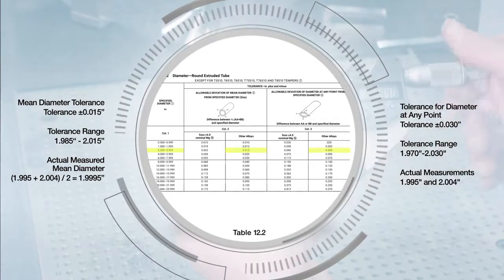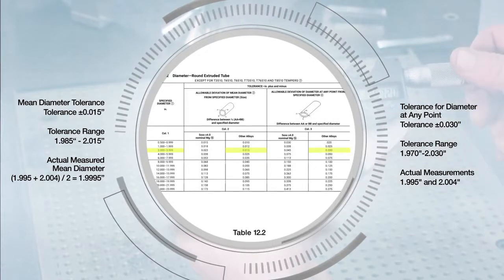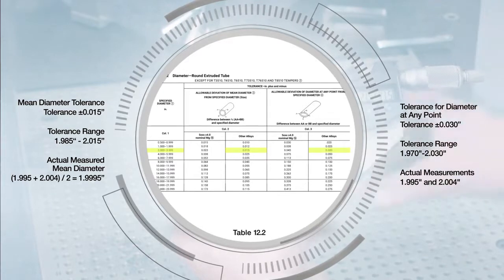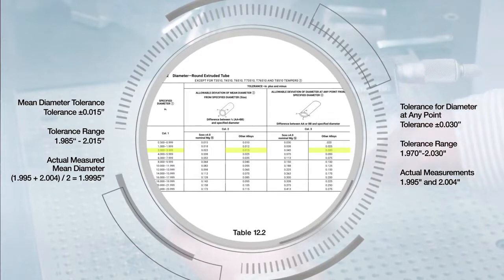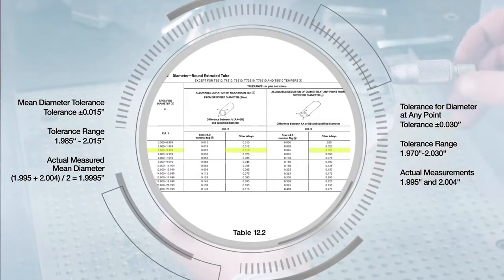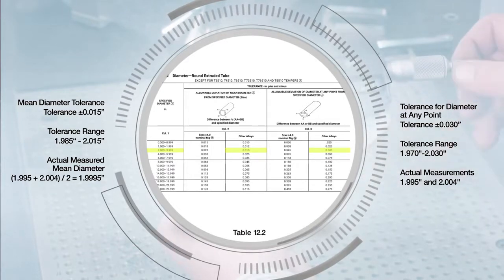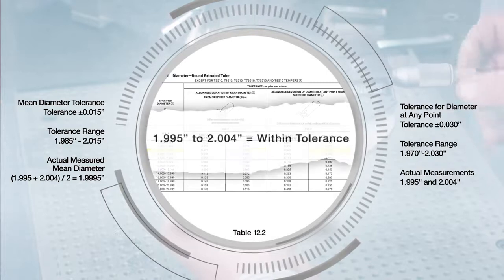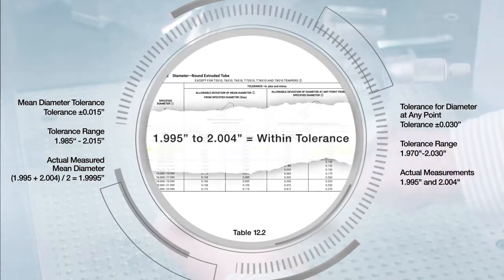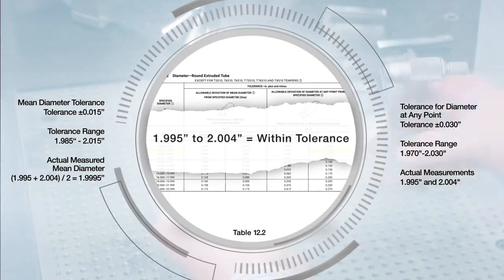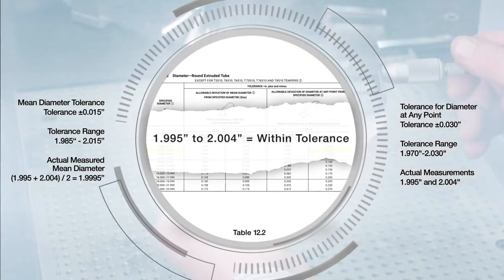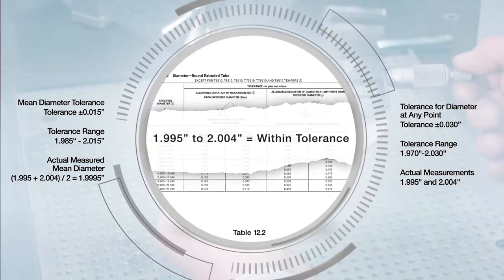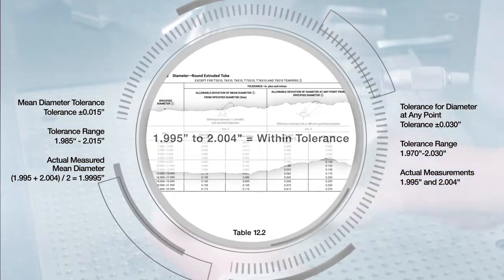The tolerance for the diameter at any point, found on the right side of column 3, is plus or minus 0.030 inches, so the actual measurements of 1.995 inches to 2.004 inches are also within tolerance.